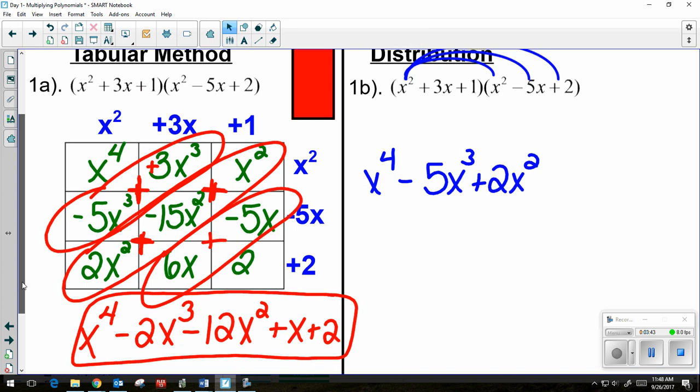Now I need to distribute that 3x to each piece in the next parentheses. You can do this two ways. You can continue writing this horizontally. So 3x times x squared is a positive 3x cubed. So if you wanted to write it this way, or if you didn't want to,